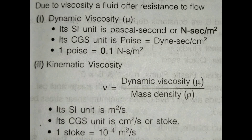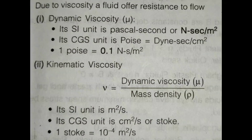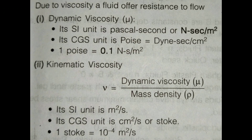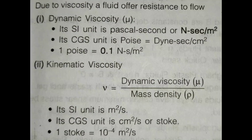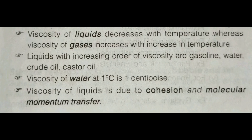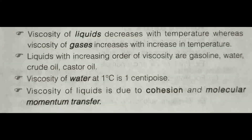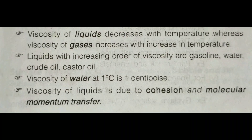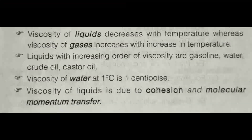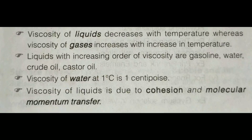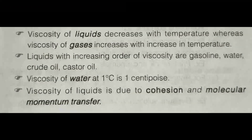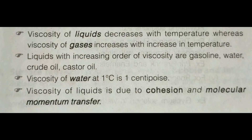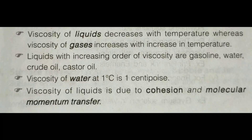Kinematic viscosity, nu, equals dynamic viscosity mu divided by mass density rho. Its SI unit is square meter per second. In CGS, it is square centimeter per second, or stoke. Remember: 1 stoke equals 10 to the power of minus 4 square meters per second. Important points: viscosity of liquids decreases with temperature, whereas viscosity of gases increases with temperature. Liquids in increasing order of viscosity are: gasoline, water, crude oil, castor oil. Viscosity of liquids is due to cohesion and molecular momentum transfer.